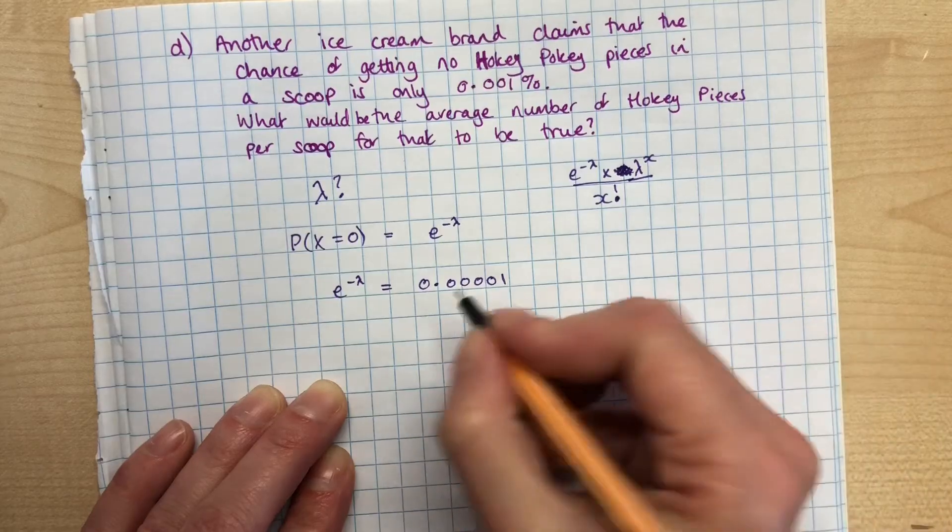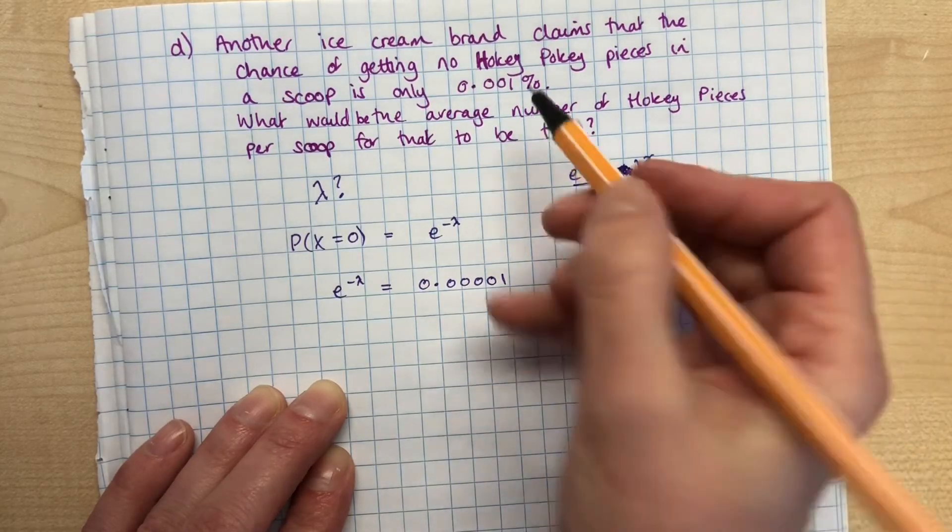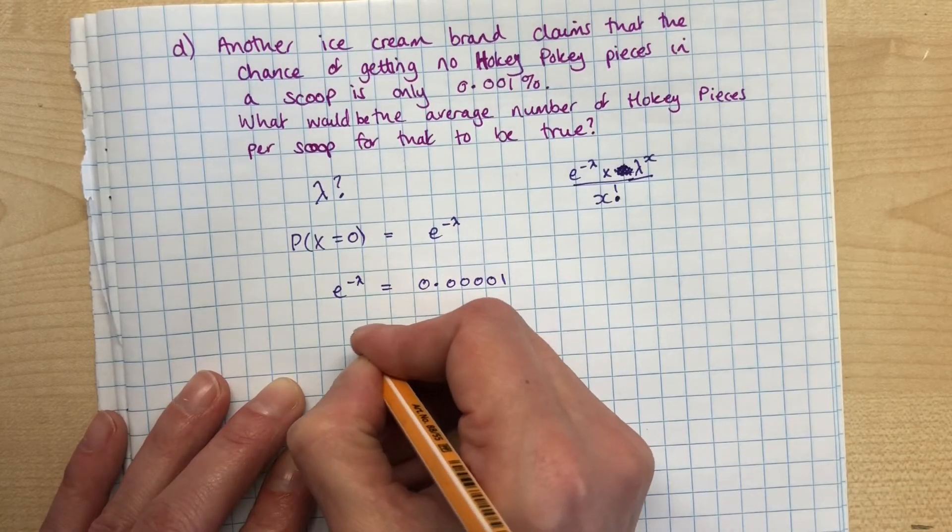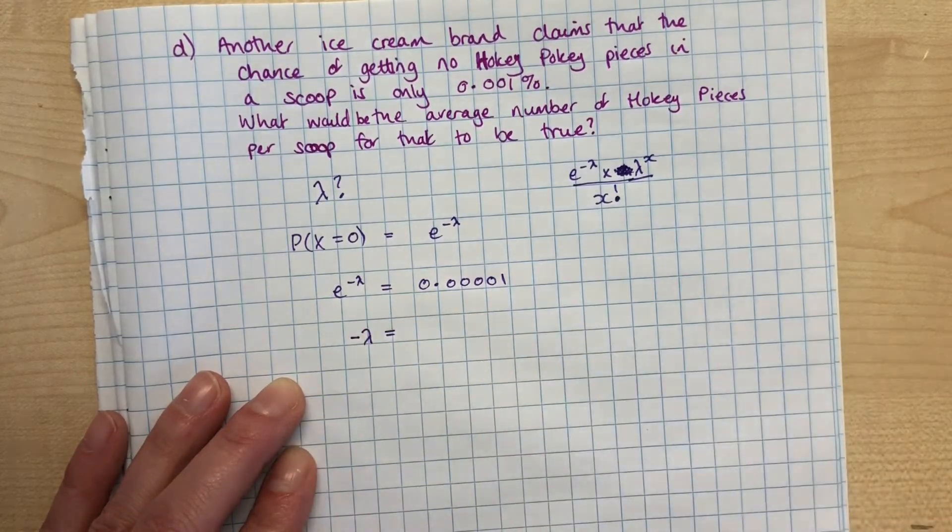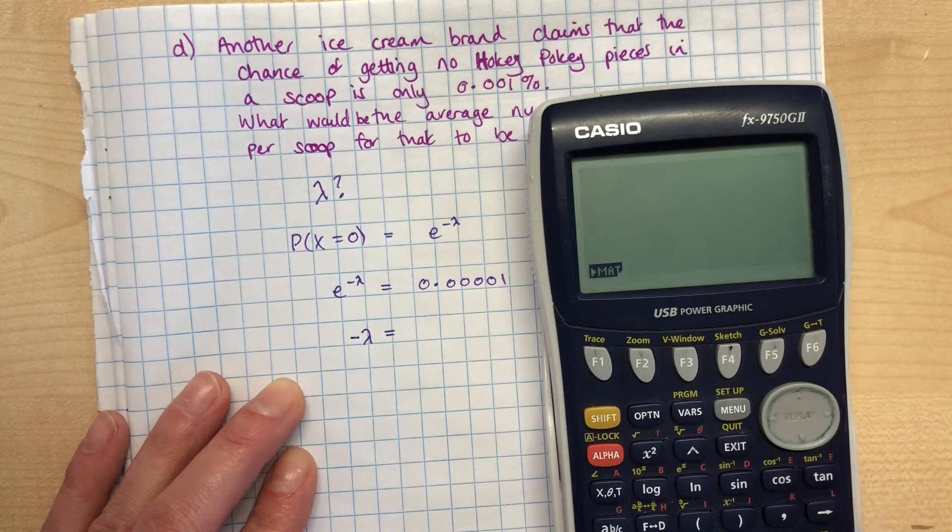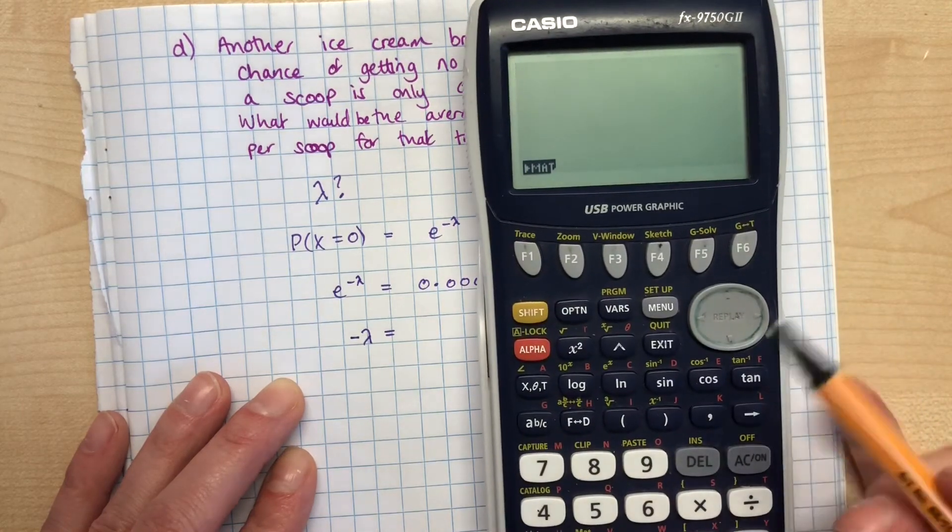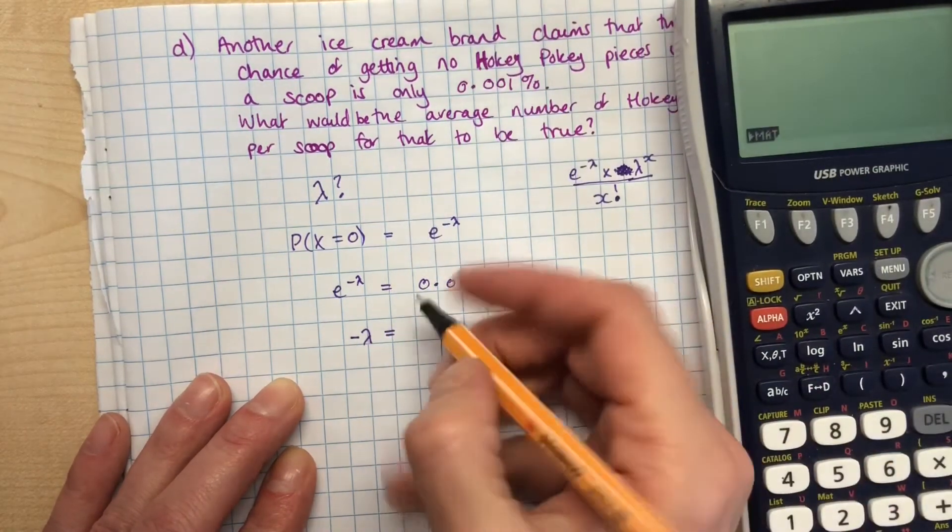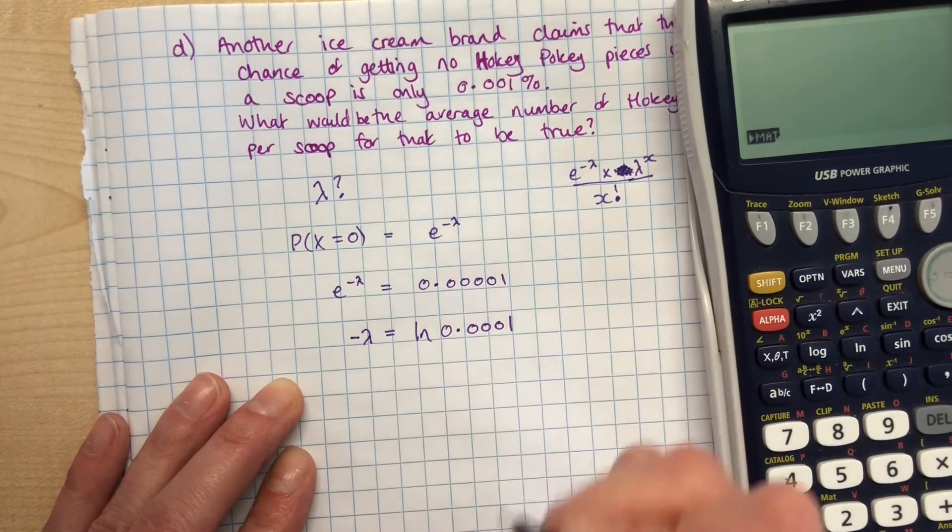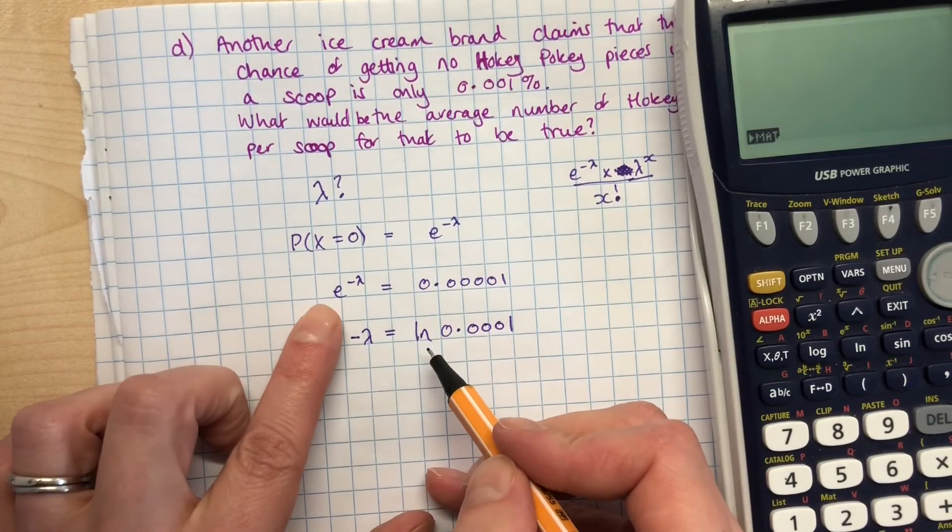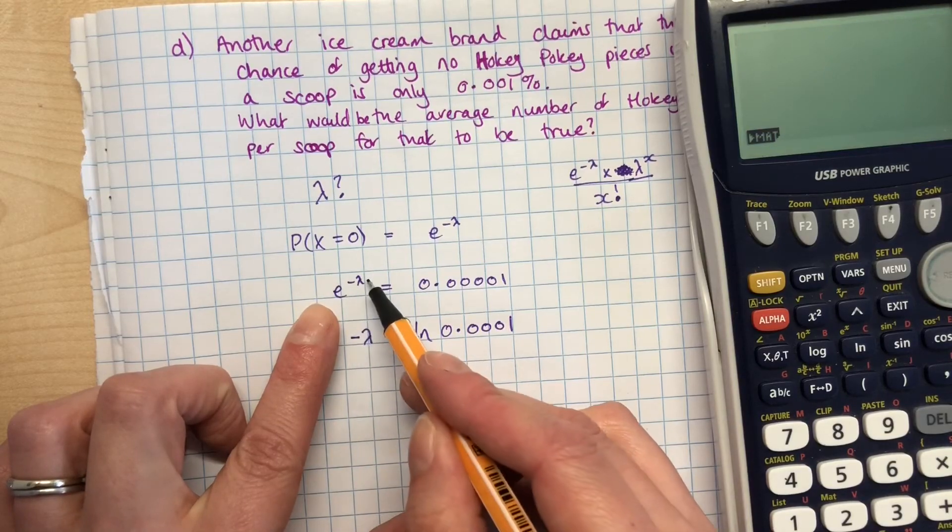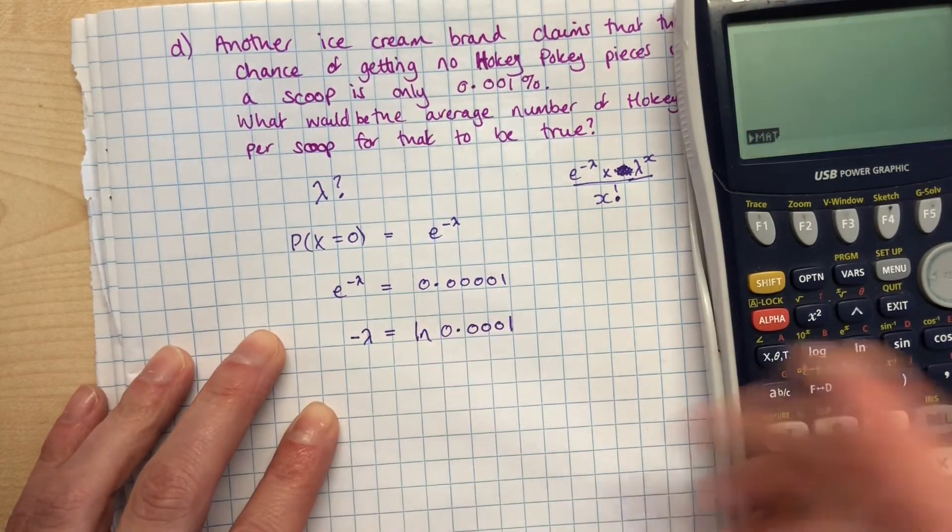Okay, because remember this is a percentage up here. All right, now if we are going to undo e to the power of minus lambda, the opposite of e is the natural log. Okay, so that's on your calculator here - it's this button here. So for this one we have to do the natural log of 0.00001. You don't really need to know too much about e's and natural logs, but that they are the opposite of each other. So to undo this happening to lambda, we do the natural log of the other side.